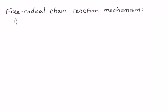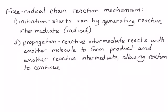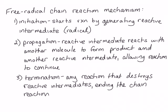The first step is called initiation. Initiation starts the reaction by generating the reactive intermediate — in this case, a radical. The second step is called propagation. In the propagation step or steps, the reactive intermediate reacts with another molecule to form a product and a second reactive intermediate, which allows the reaction to continue. The final step is called termination. Termination steps are any steps that destroy reactive intermediates, which ends the chain reaction. A chain reaction will continue until termination has destroyed all of the reactive intermediates available.